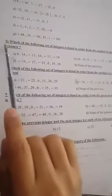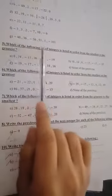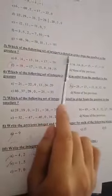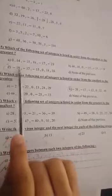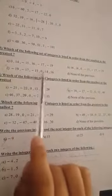Number C. Sorry, number 5. Which of the following set of integers is listed in order from the smallest to the greatest? From smallest to greatest, this one: negative 19, negative 17, negative 15, 0, 14, and 16.